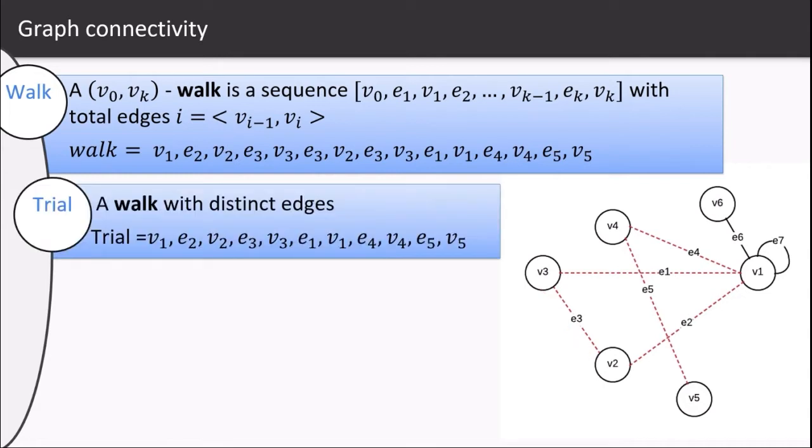A trial is a walk that does not have common edges. So in the given example, the e3 edge is common in our above walk. By eliminating the second edge e3, we make a trial traveling from v1, v2, v3, back to v1, and then v4 and finally v5.